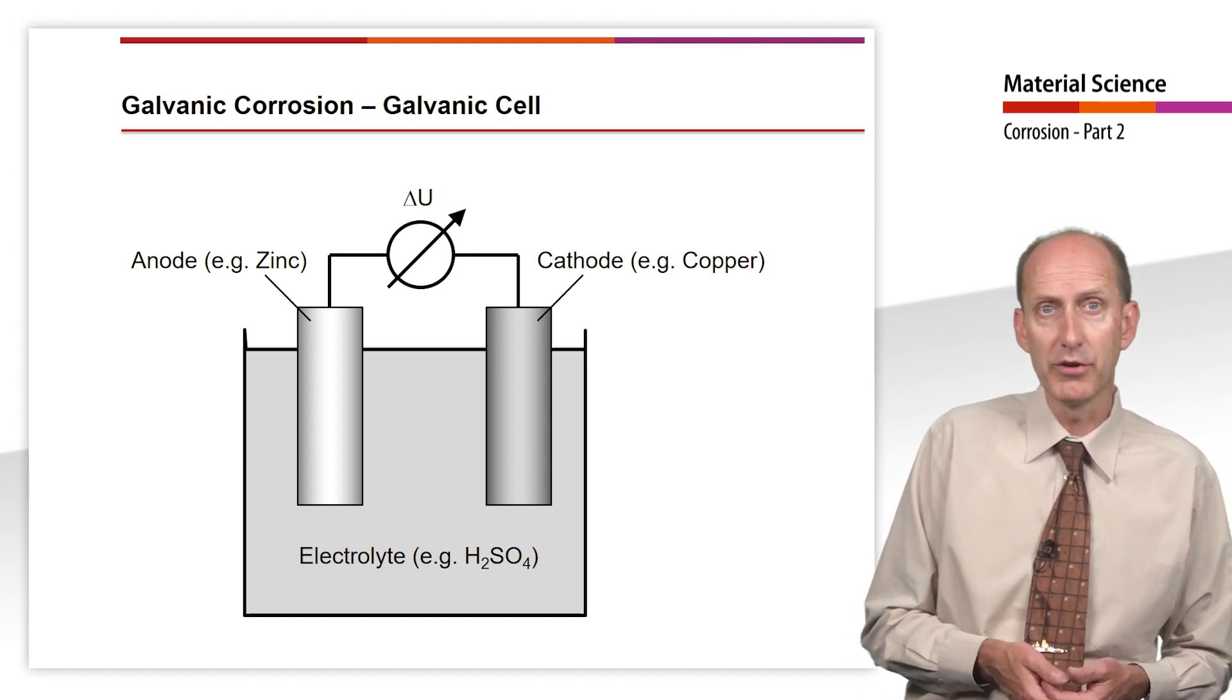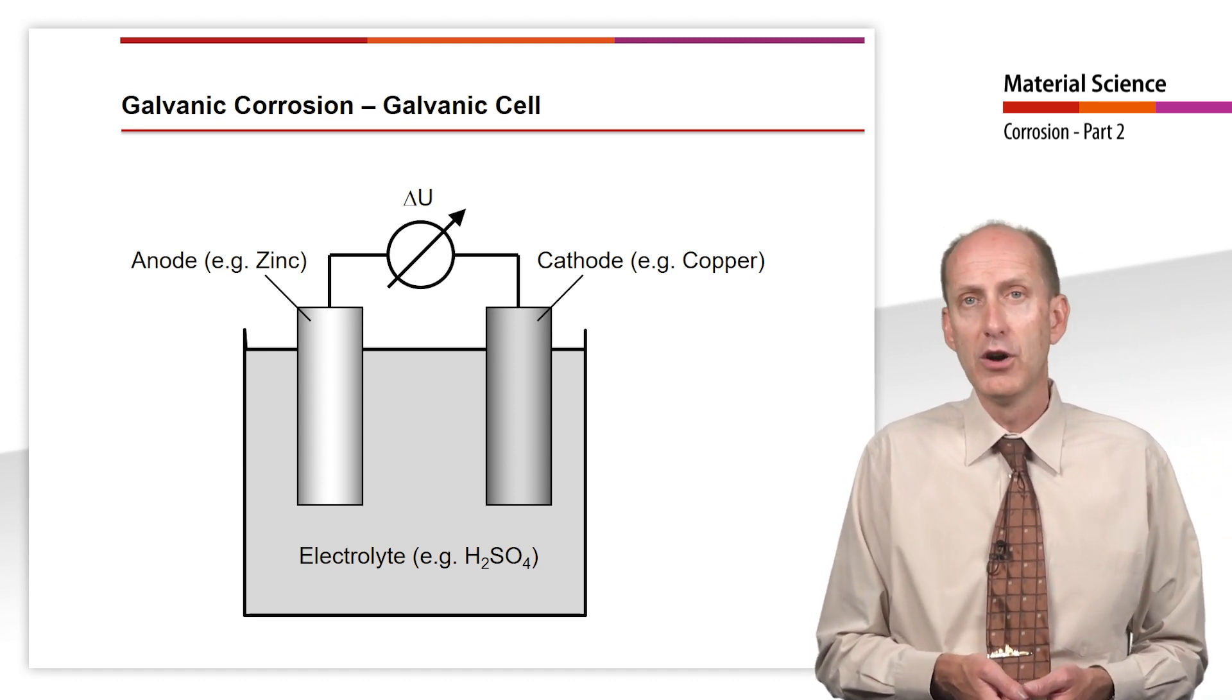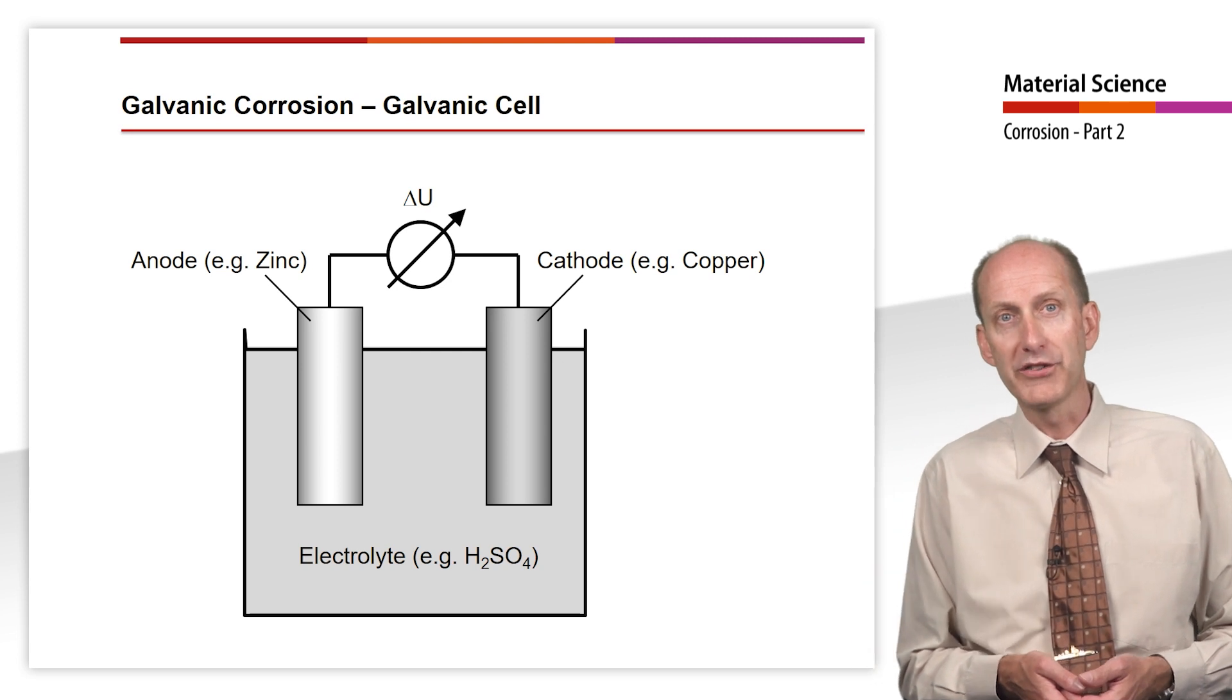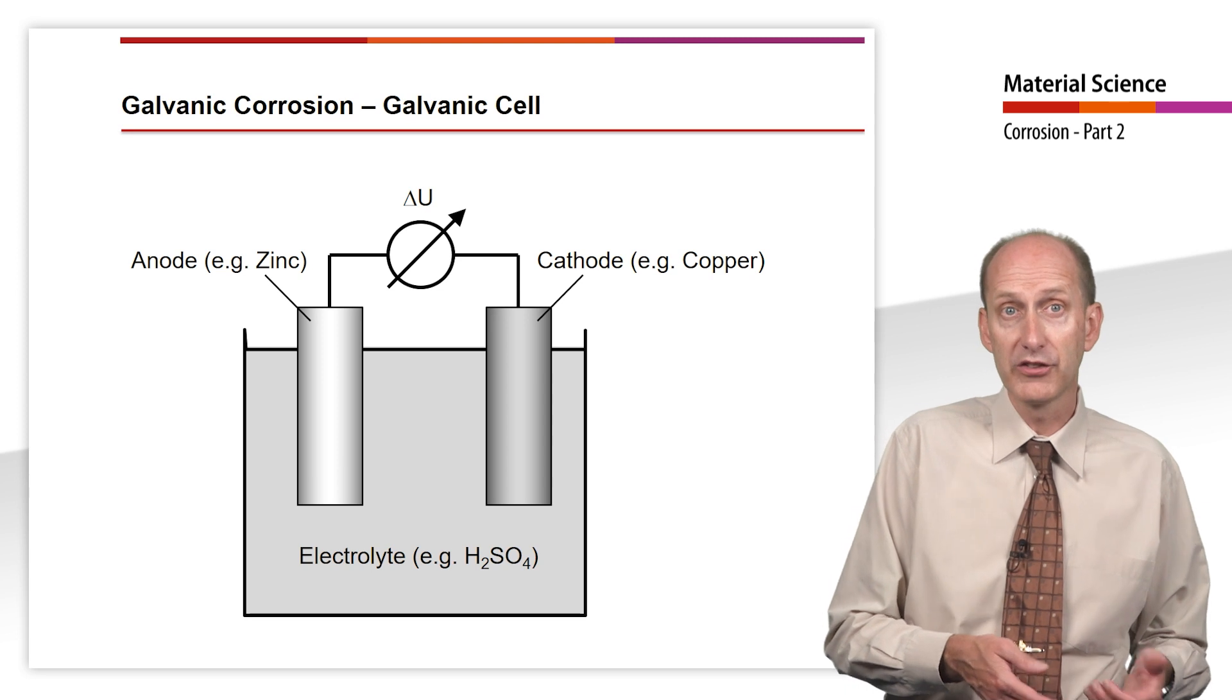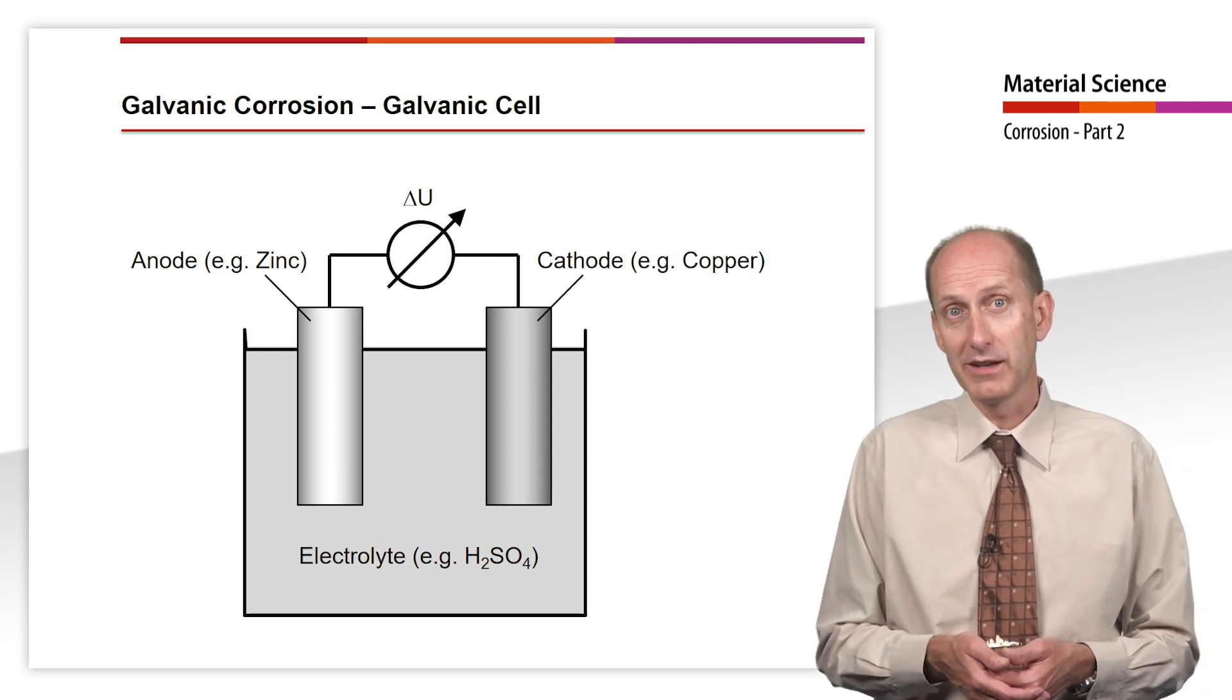This voltage depends on the material the conductors are made of. For zinc and copper, for example, a voltage of 1.1V is generated. If a circuit is connected to this voltage, a current starts to flow.